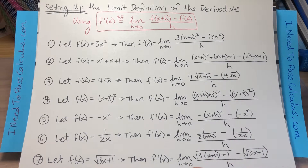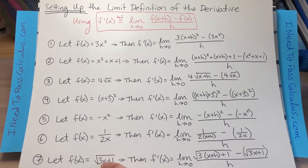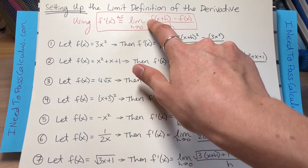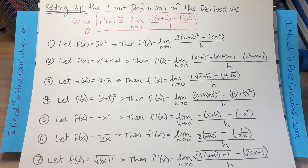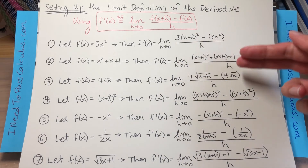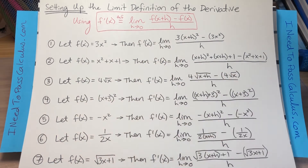Last but not least, problem seven. We have f(x) = √(3x + 1). For the limit definition of the derivative, under the square root we'll have 3(x + h) because that's exactly where the x was — you remove the x from the original function and replace it with (x + h). Don't forget the plus 1 is still there, all under the square root, representing your f(x + h) part. Then you subtract a perfect copy of the original function, all divided by h. That was some practice just setting up the limit definition of the derivative — it's good to do repetition like this because in each of these subtle different cases, it can be hard to know where to put the plus h.